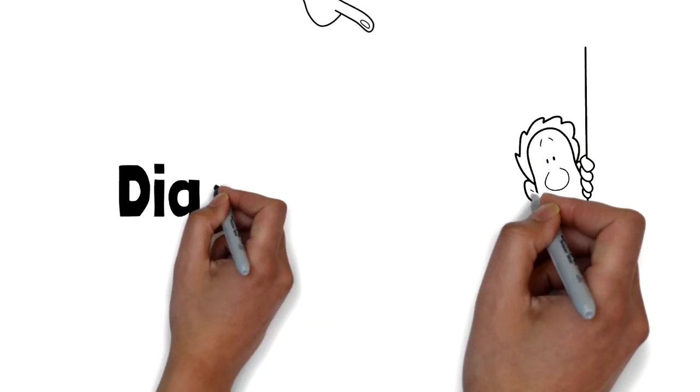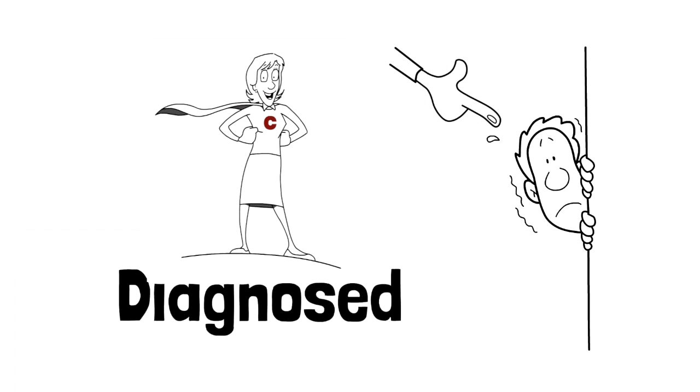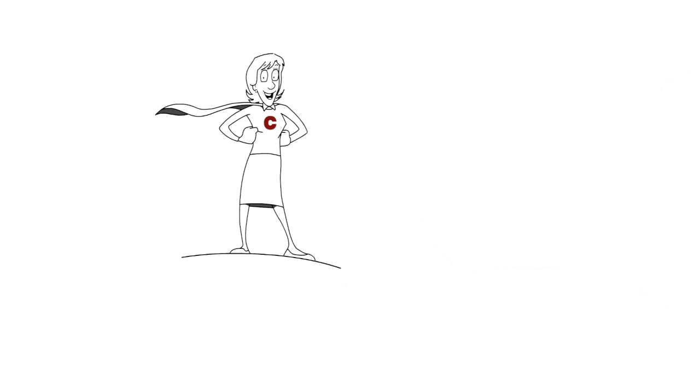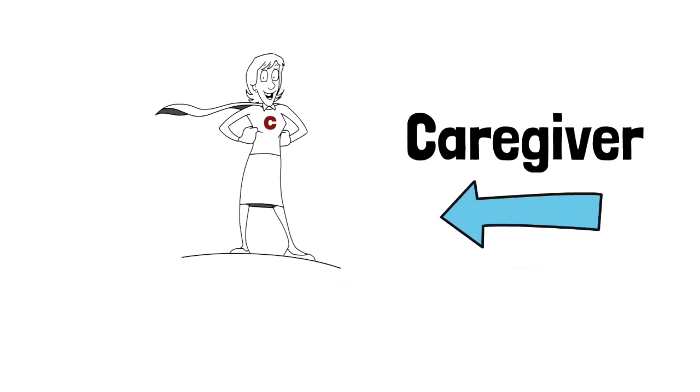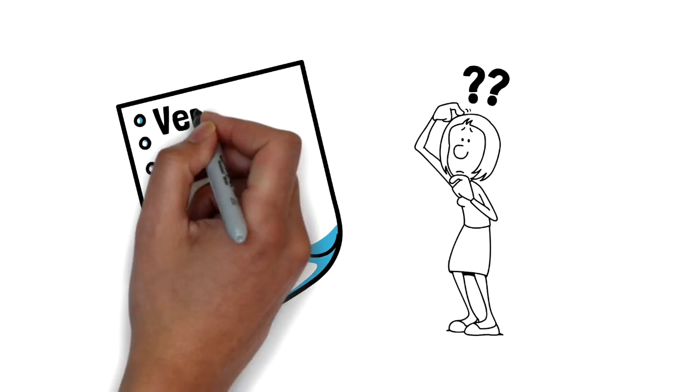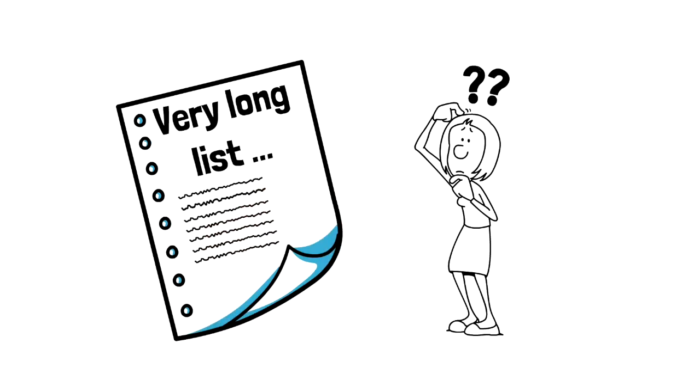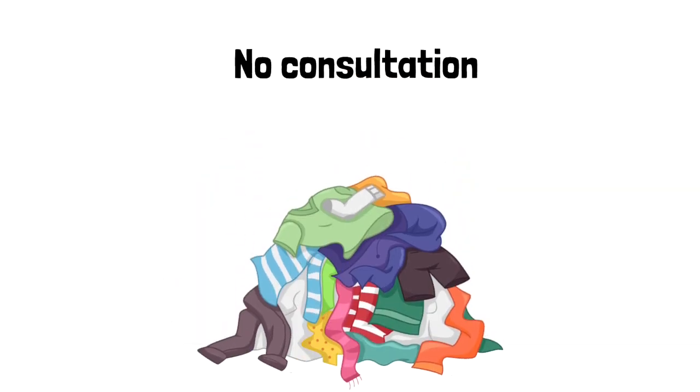So when a patient's diagnosed, basically at that point, the partner, wife, husband, whoever it may be, becomes a carer. You go from probably just your everyday mundane jobs that you do around the house to suddenly having a great big long list of things you have to do for the patient. It's all just dumped on you. No consultation, no discussion. It's just expected.